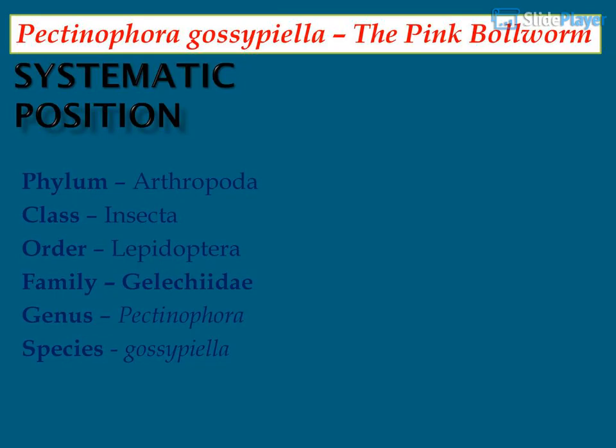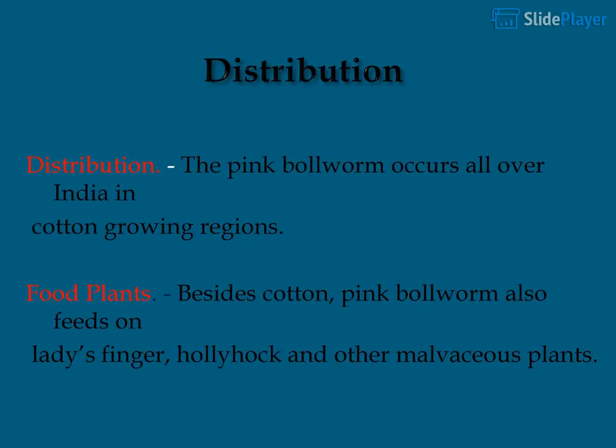The systematic position of Pectinophora gossypiella, the Pink Boll Worm: it occurs all over India in cotton-growing regions. Besides cotton, the Pink Boll Worm also feeds on Lady's Finger, Hollyhock, and other malvaceous plants.